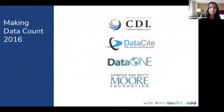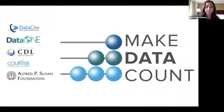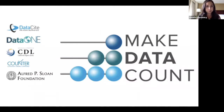Following that, the Moore Foundation gave a meeting grant for CDL, DataCite, and DataOne to come together and think about what a phase of a project would look like building off of what we found in the survey — what researchers value and how we could eventually get to the point of having data metrics. Which brings us to our project now: the Sloan Foundation funded a two-year project for DataCite, DataOne, and CDL. We've also been working with Project Counter to write a code of practice.